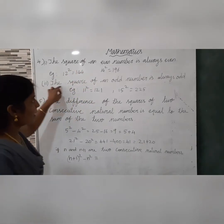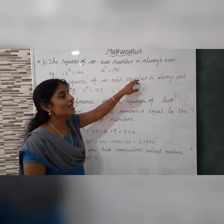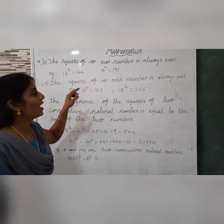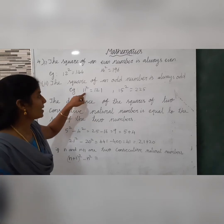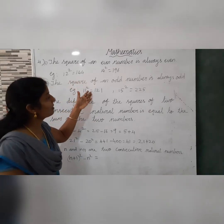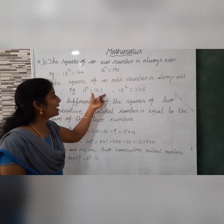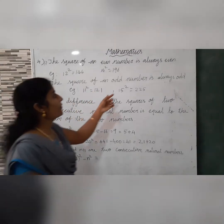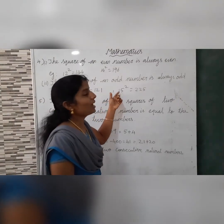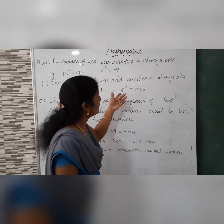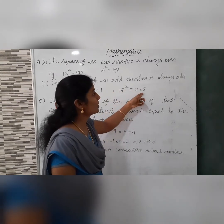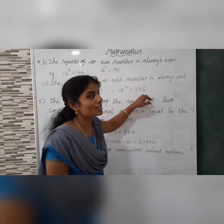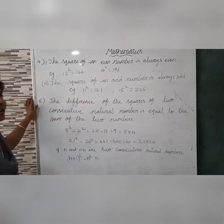Second subdivision: the square of an odd number is always odd. For example, 11 is odd and 11² = 121, which is odd. Also, 15 is odd and 15² = 225, which is also odd. So the square of an odd number is always odd.